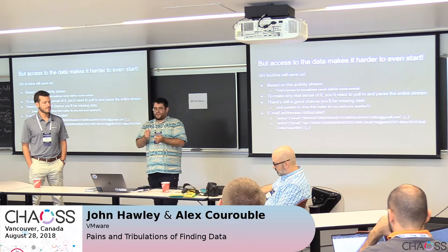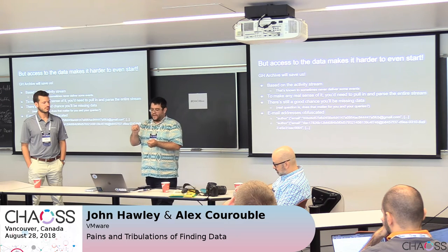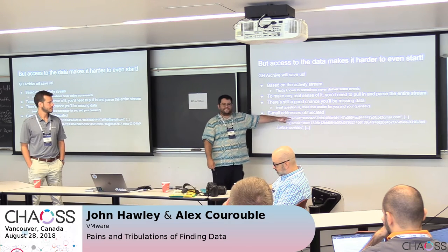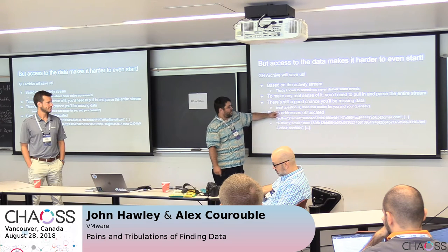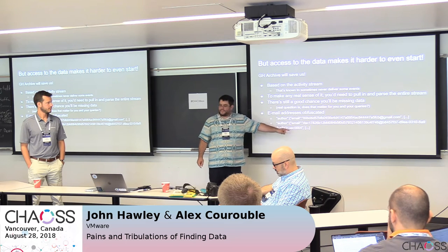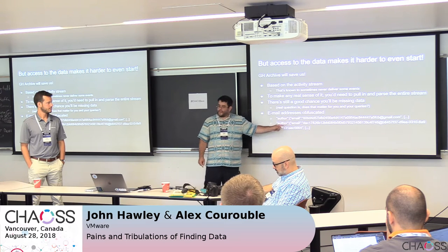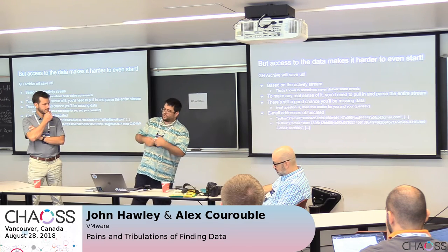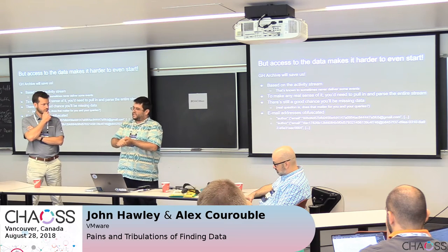It gets more interesting — GH Archive has recently changed their entire dataset. Where they used to give you ...@gmail.com style addresses, they are now giving you hashed values, which we assume are currently unique, though we have not been able to prove this. In some cases they will also uniquely hash the domain name, and we can't figure out the reason for hashing the domain name. Which makes it interesting if you're trying to do an entire query for, say, @vmware.com — you can't actually correlate with that.